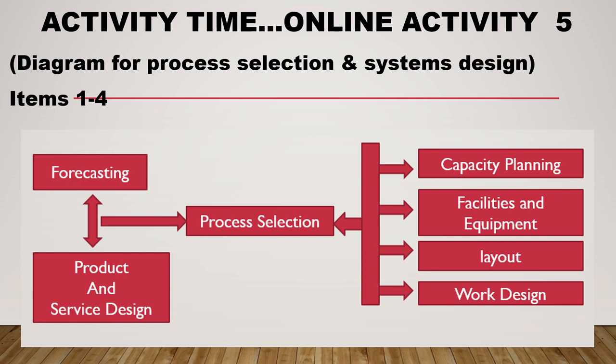I have here the diagram for Process Selection and Systems Design. This diagram shows the different activities that must be undertaken first before you could proceed with process selection. It shows that forecasting, product, and service design could be done simultaneously, and must be done before you could decide on the process to be implemented for producing your product.